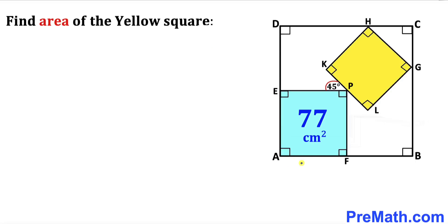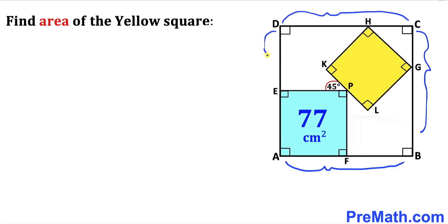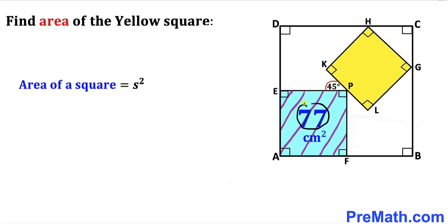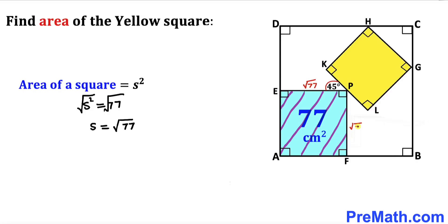Keep in mind that ABCD is a square, meaning all side lengths are equal. Now let's focus on this blue square whose area is 77 centimeters square. Recalling the area formula: area = s², where s is the side length. Since s² = 77, taking the square root on both sides gives s = √77. So all side lengths of this blue square are √77.